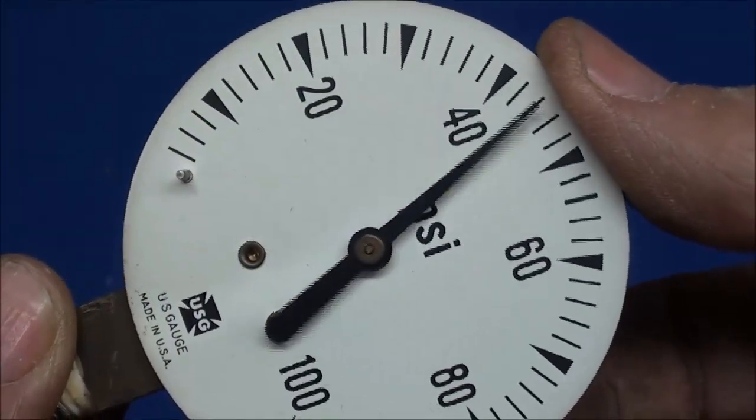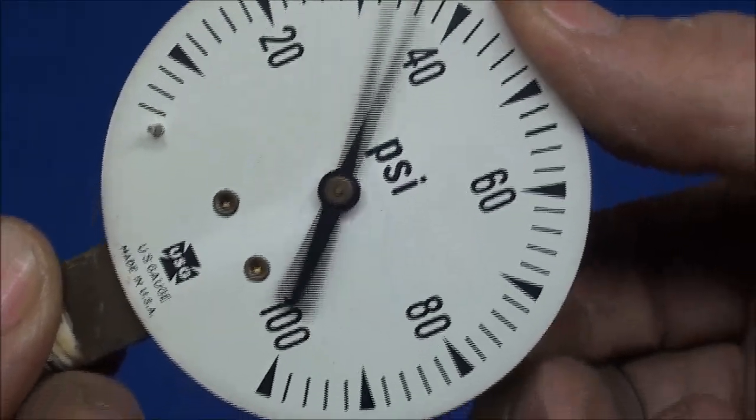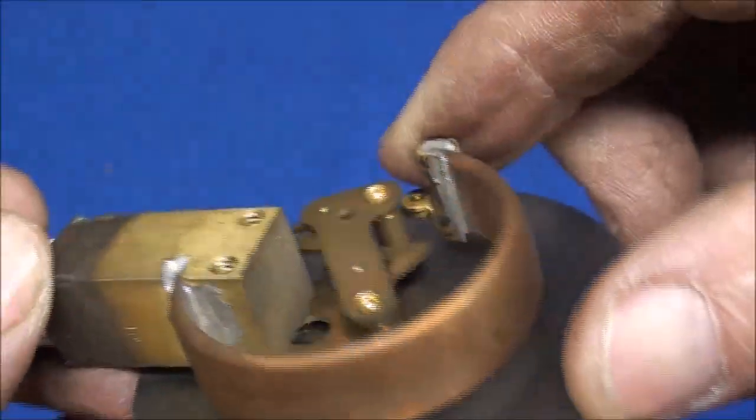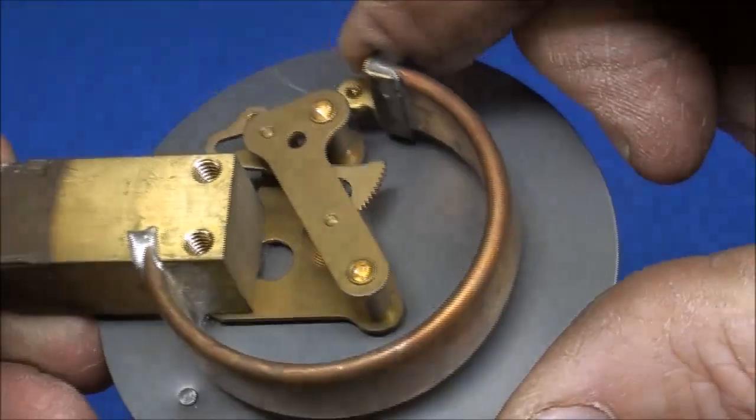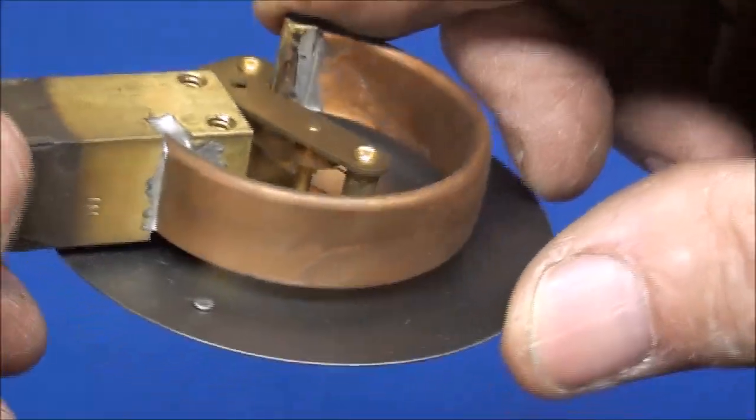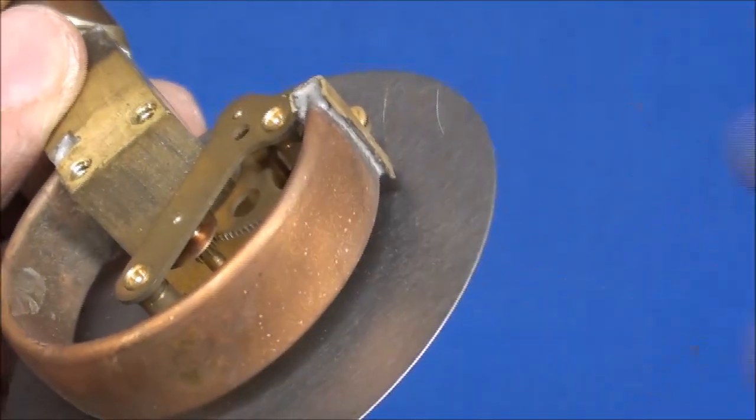Now I'm straightening up the Bourdon tube with my fingers, bringing it clear up to 100. And by the way, it takes considerable pressure to do that. But there's a movement in here. I don't know if it's going to show up or not, but it won't do any good to take the face off. I was going to take the face off.